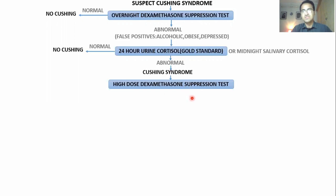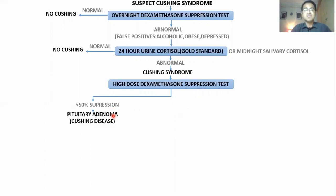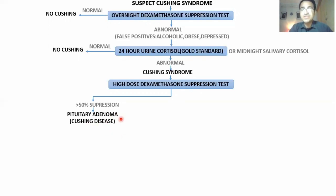In the high-dose dexamethasone suppression test, you give a high dose of dexamethasone to a patient and see whether cortisol levels go down or not. If there is greater than 50% suppression of cortisol levels, it means this is a pituitary adenoma secreting excess ACTH, and that excess ACTH is stimulating the adrenal gland to produce excess cortisol.